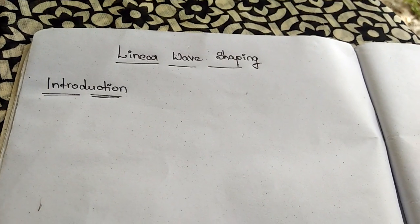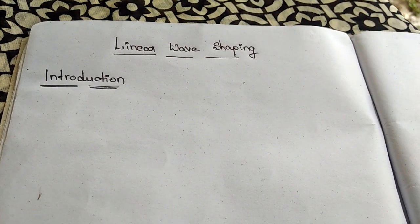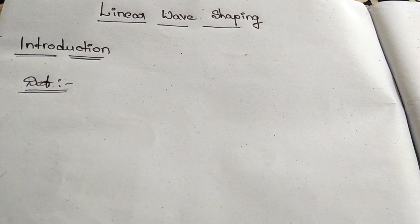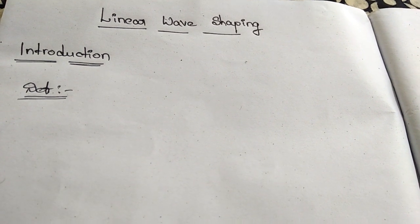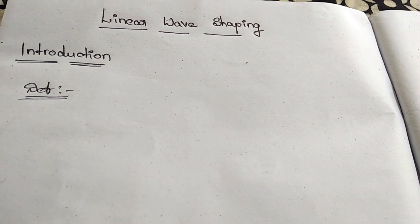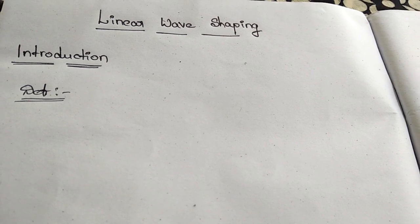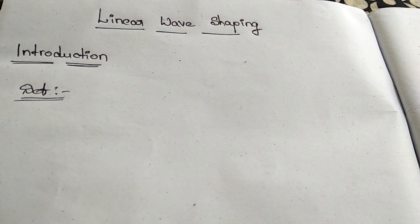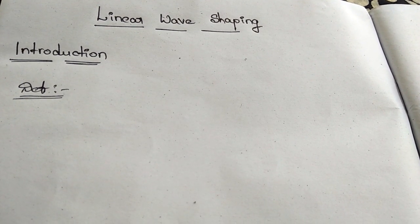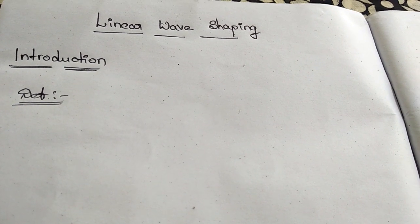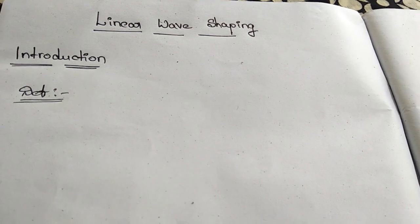First, about the definition. Linear Wave Shaping is defined as the process of altering the form of a non-sinusoidal signal by transmitting it through a Linear Network.